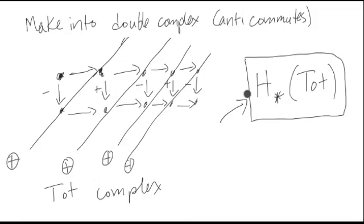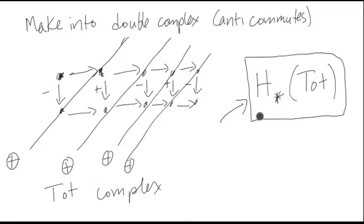Spectral sequences focus on information about the homology of this total complex — or cohomology, depending on if you want to reverse the order of indices, whether you want them climbing or going down. It's the same basic idea. The information that we get about the homology of this complex will help us know about things that are happening before. That's the way we go about spectral sequence arguments.